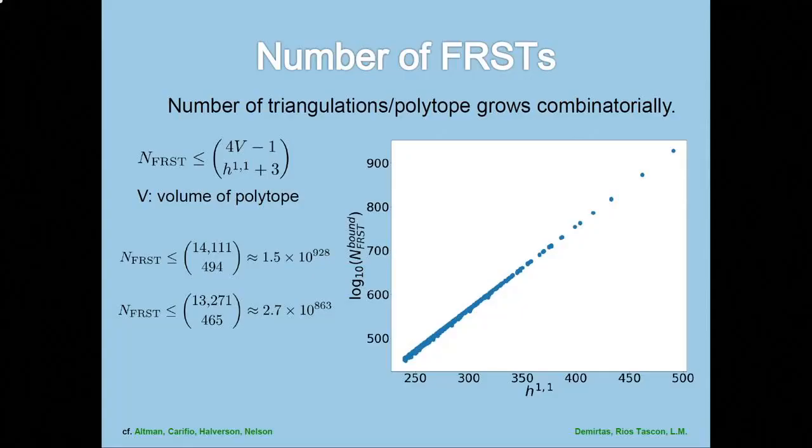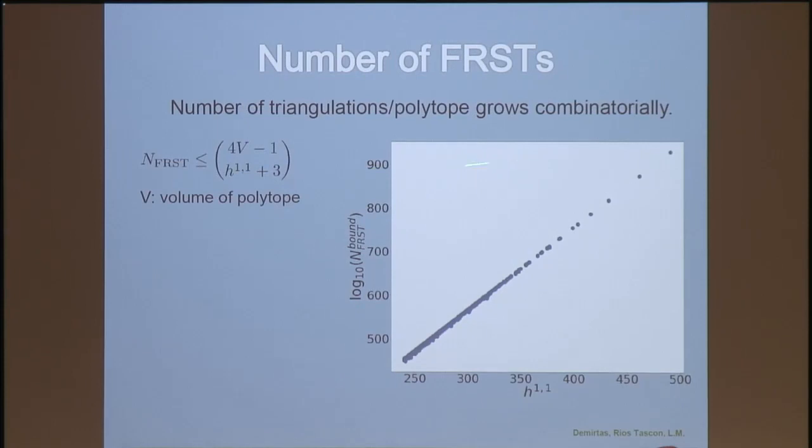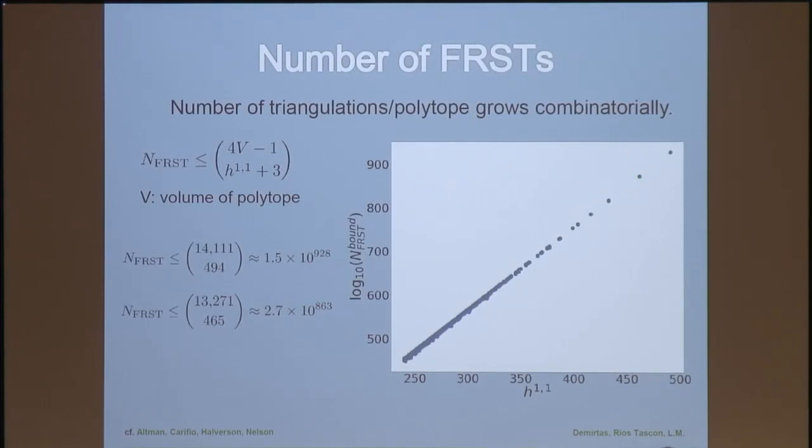So how many triangulations do these things have? Well, we don't know. But we can put a bound, unfortunately, an upper bound that's combinatorially big. So we've shown, this is work with my students, Demirtas and Rios-Tascon, the number of fine regular star triangulations is bounded above by this binomial coefficient. V is the volume of the polytope. It's some lattice polytope in 4D, so just compute its volume, and choose H11 plus three. Here's a plot of it. So these are all of the points, all of the polytopes in the Kreuzer-Skarke list, with H11 from 250 to 491, and here is log base 10 of the number of triangulations according to this bound. You see it goes up to 10 to the 900. The winner up here, the biggest one, H11 of 491 is 10 to the 928, and the runner-up is 65 orders of magnitude below.